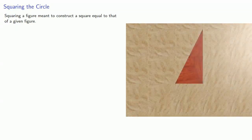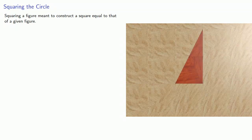One of the classic geometric construction problems is squaring the circle. But what do we mean by that? Squaring a figure meant to construct a square equal to that of a given figure.